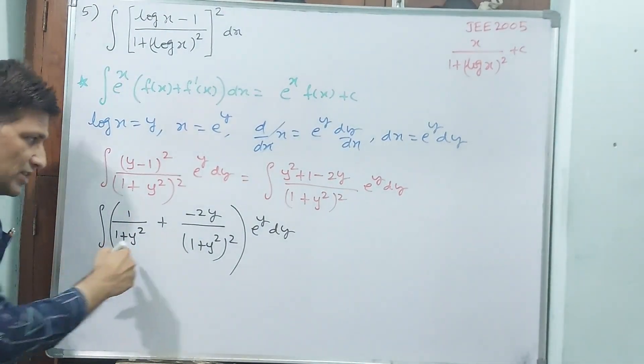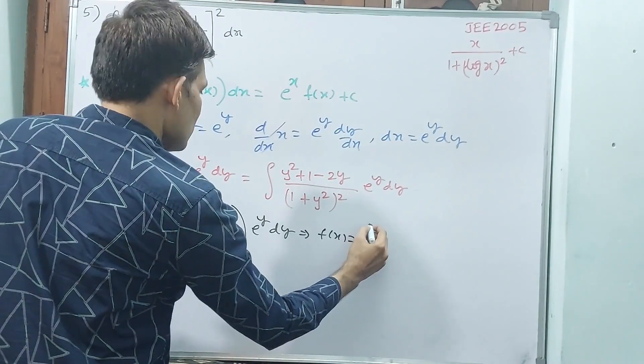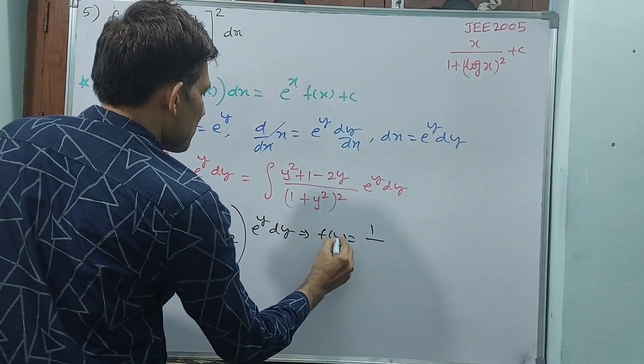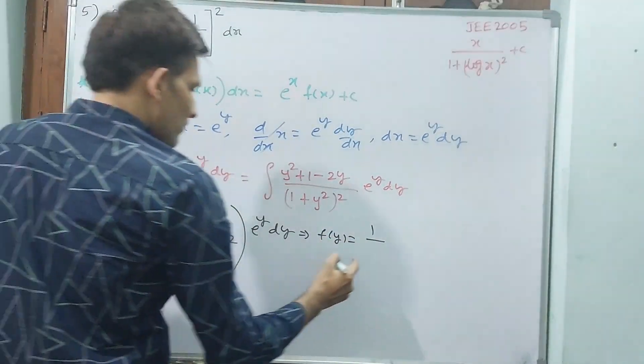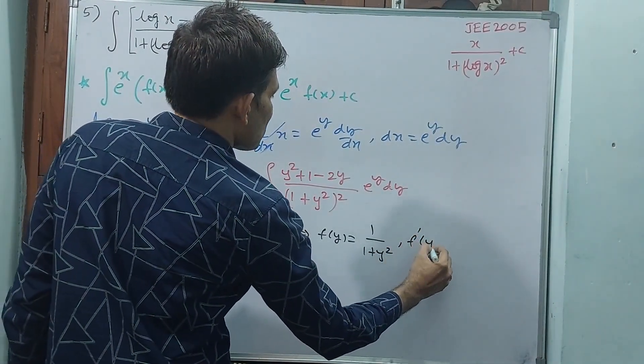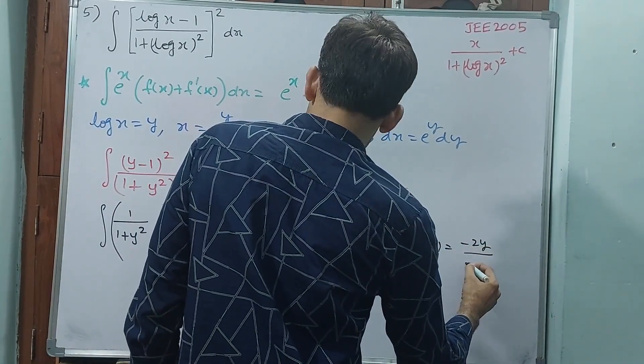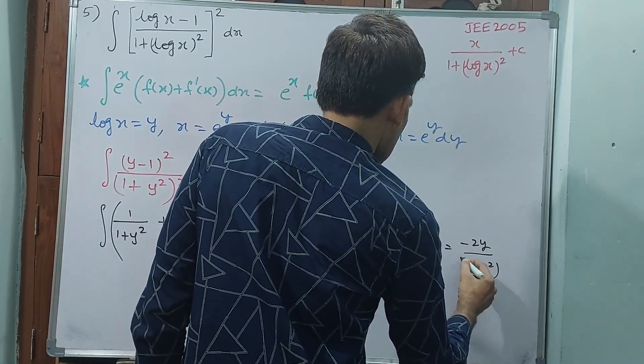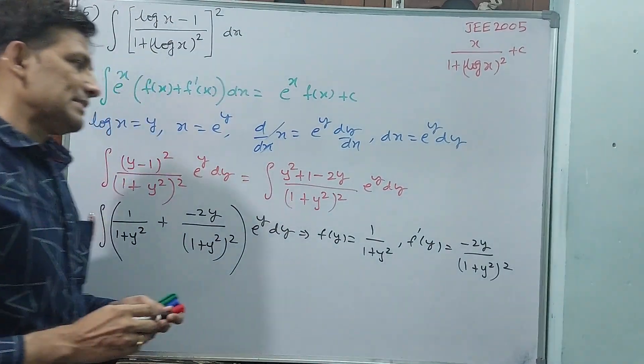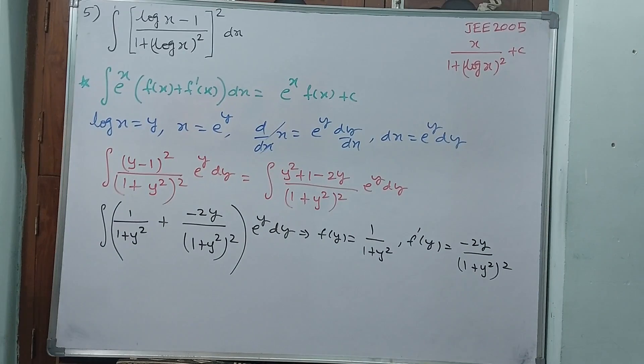What will happen? f of y I will take because all in terms of y is there. f of y you take as 1 by 1 plus y square, then f dash y is going to become minus 2y by 1 plus y square whole square.